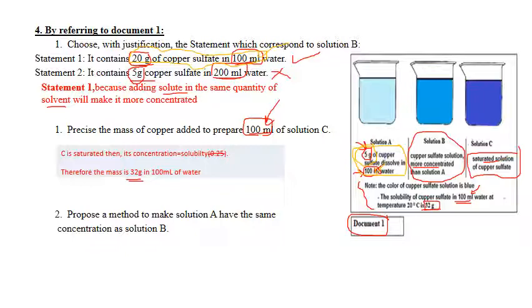A has 5 grams, B has 20 grams, so I should add 15 grams of solute to A.